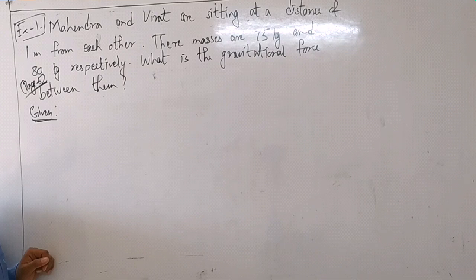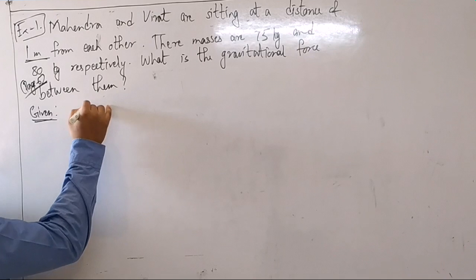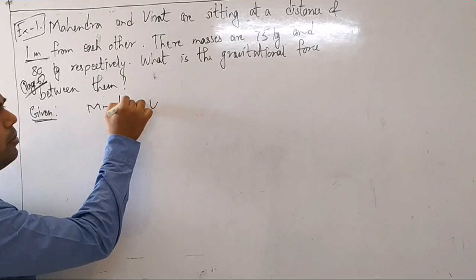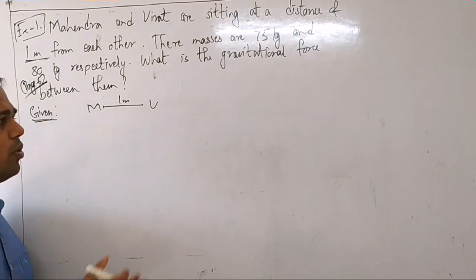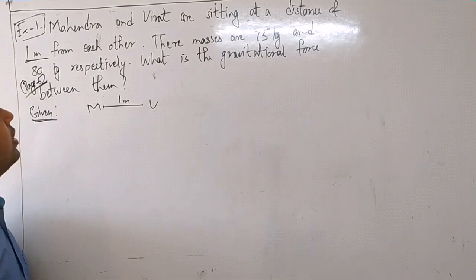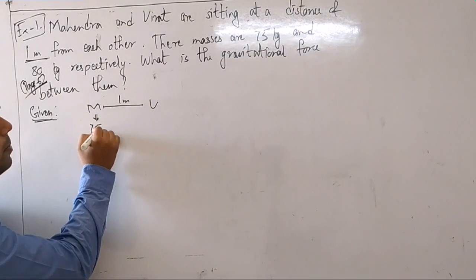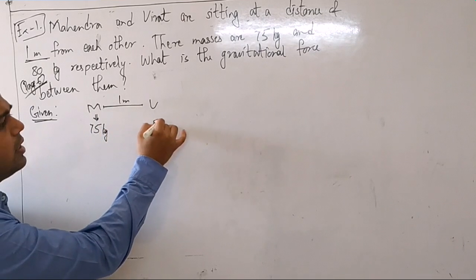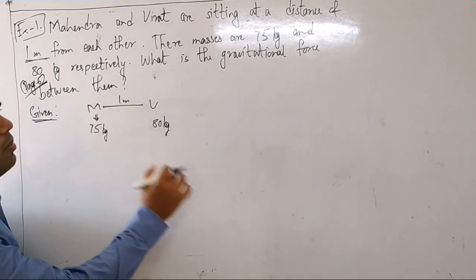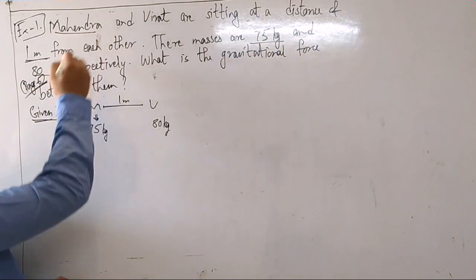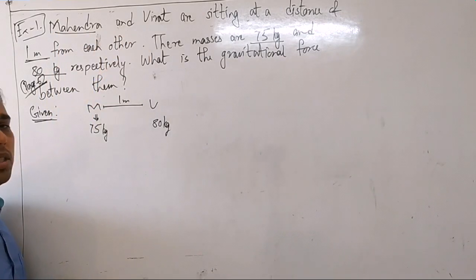Mahendra and Virat are sitting at a distance of 1 meter. Their masses are 75 kg and 80 kg respectively. What is the gravitational force between them?